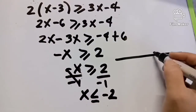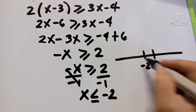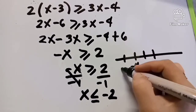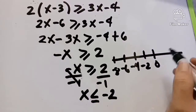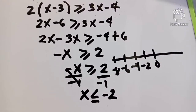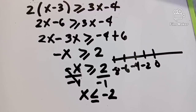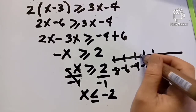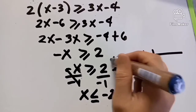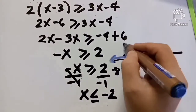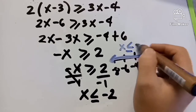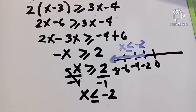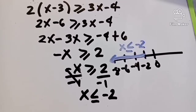How do we graph X less than or equal to negative 2? We draw a number line with negative 2, negative 4, negative 6, and negative 8. Since X is less than or equal to negative 2, we place a closed circle at negative 2 and the line goes to the left toward negative 8. That's our graph — X less than or equal to negative 2.